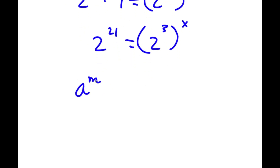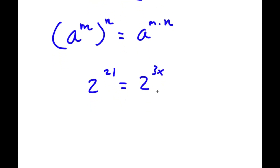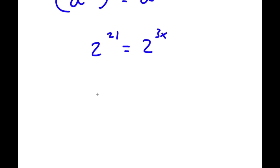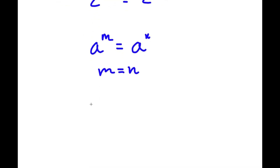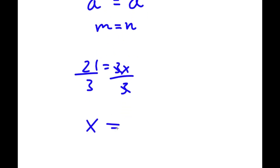Now, if I have something in the form a to the power of m to the power of n, this is equal to a to the power of m times n. So 2 to the power of 3 to the power of x equals 2 to the power of 3x. So I have 2 to the power of 21 is equal to 2 to the power of 3x. Now, if a to the power of m equals a to the power of n, this means that m equals n. So in this case, 21 equals 3x. All I have to do is divide both sides by 3. These two cancel out, and I'm left with x is equal to 21 divided by 3, which is simply 7. So x equals 7 is my answer.